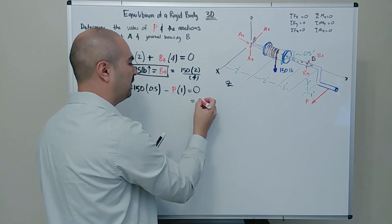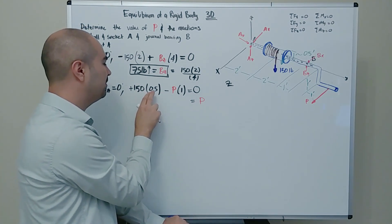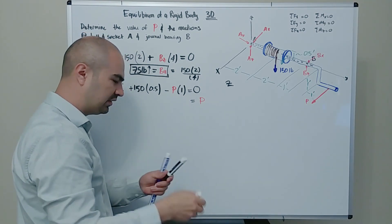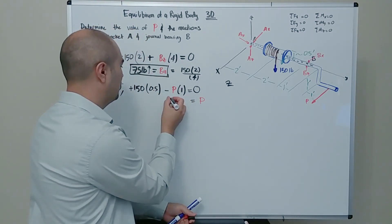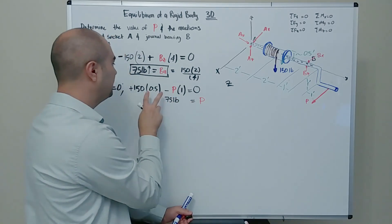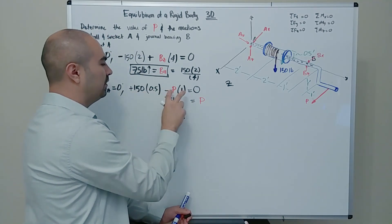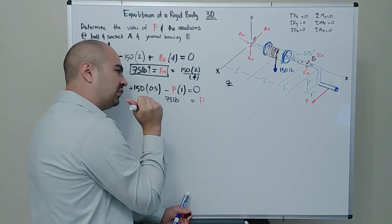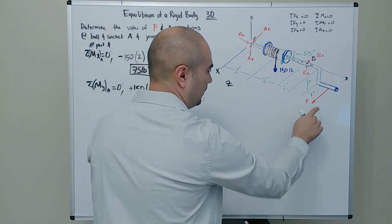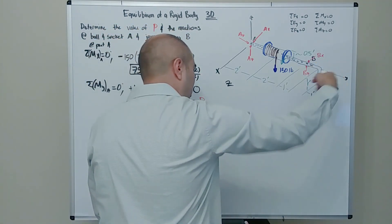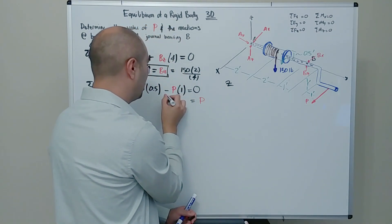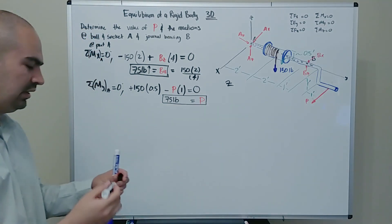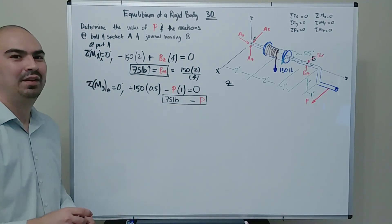Solving: P = 150×0.5 / 1 = 75 pounds. The positive result means the assumed direction is correct. So the magnitude of force P needed to keep this crank in equilibrium is 75 pounds.